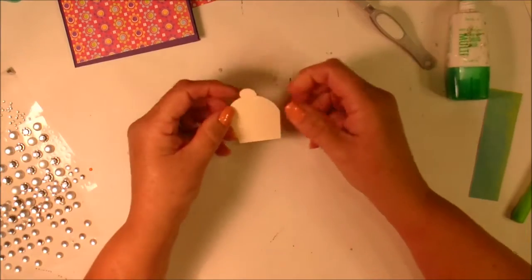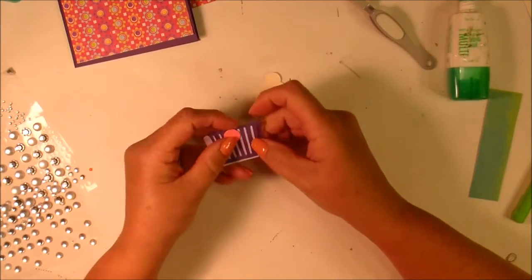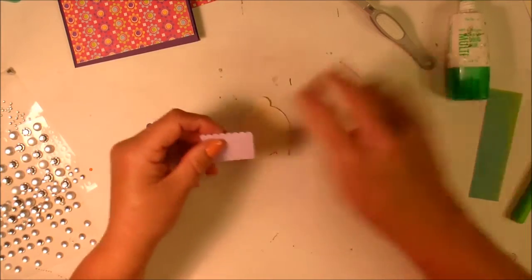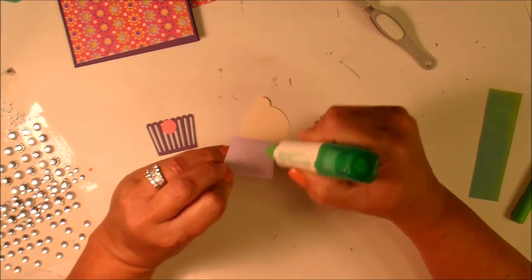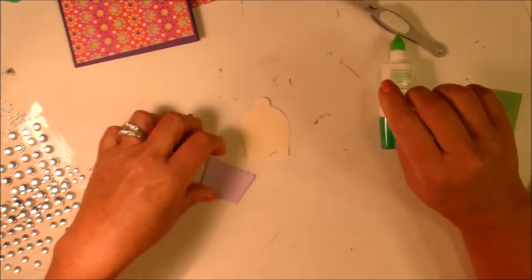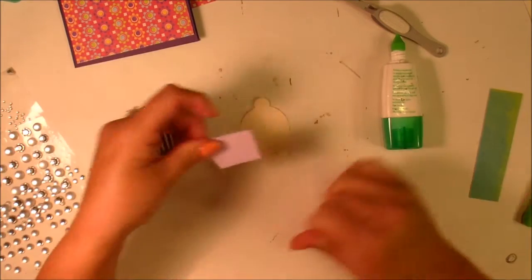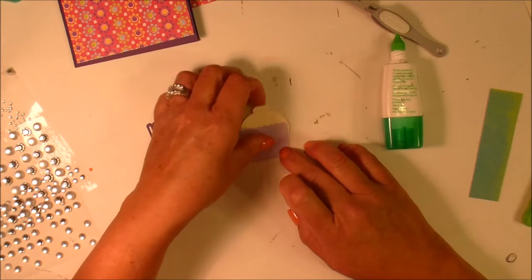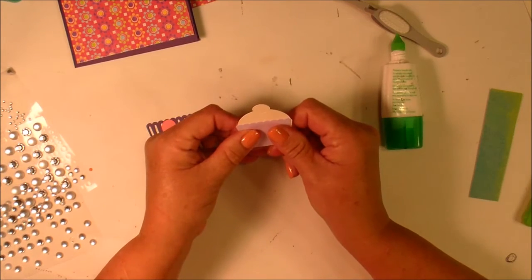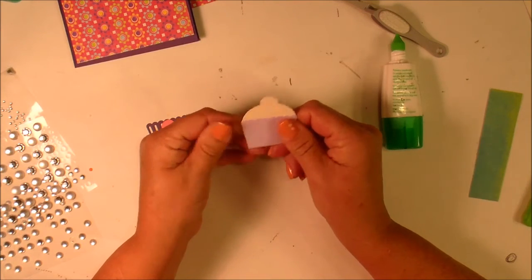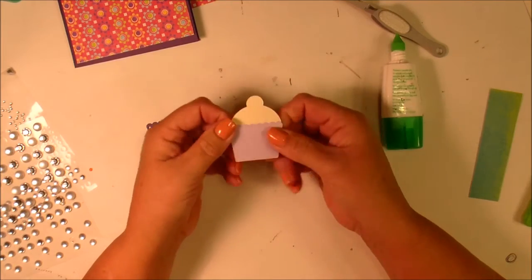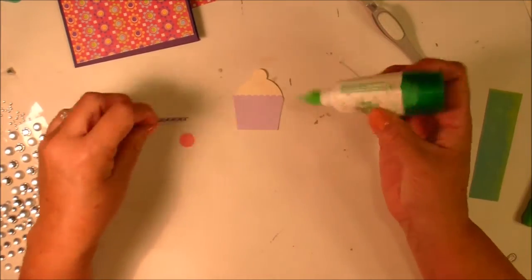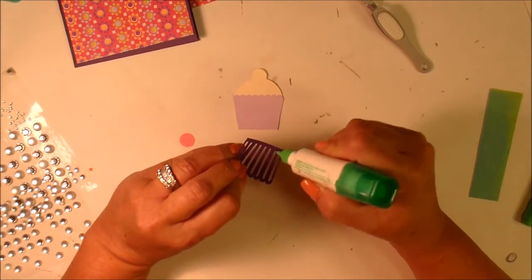I have this cute little cupcake from the Sweet Treats Cricut cartridge. This is the bottom layer, and then I'm going to put this really light purple color on it. This paper right here, I believe, is Color Box from Walmart, if anybody's curious.